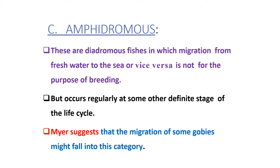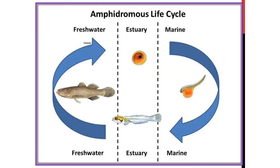Now, amphidromous fishes are diadromous fishes in which migration from fresh water to the sea or vice versa is not for the purpose of breeding, but occurs regularly at some other definite stage of the life cycle. Meir suggests that the migration of some gobies might fall into this category. The diagram shows the amphidromous life cycle with fresh water, estuary and marine water zones, and the different types of fishes found in these waters.